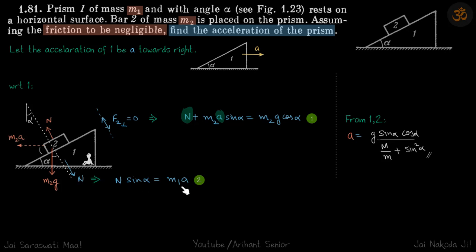This is not in the reference frame of 1, because in reference frame of 1, acceleration of 1 will be 0. This equation is only for prism 1 due to the only external force which it has in x direction, that is N sine alpha.